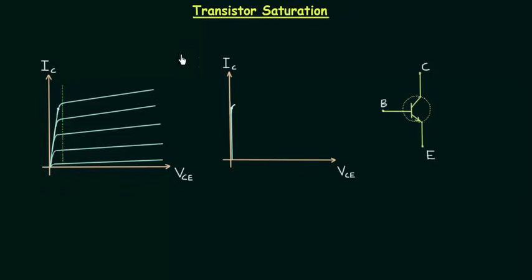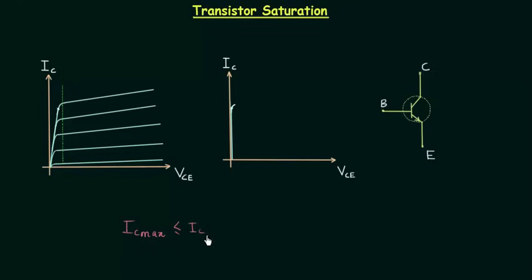In this lecture I will explain transistor saturation. The transistor is said to be saturated when the collector current IC is larger than or equal to the maximum collector current IC_max for the particular design. In this saturation condition, the collector current is represented by IC_sat, representing the collector current in the saturation condition.